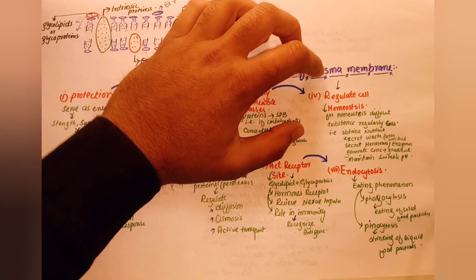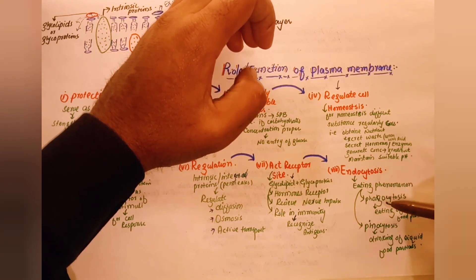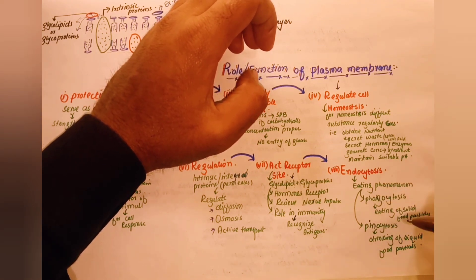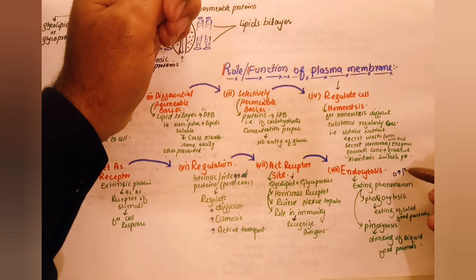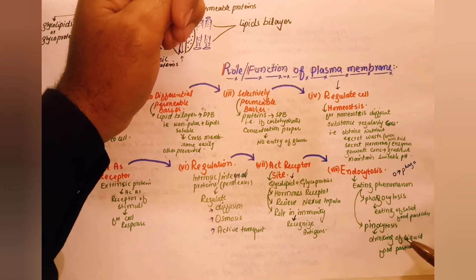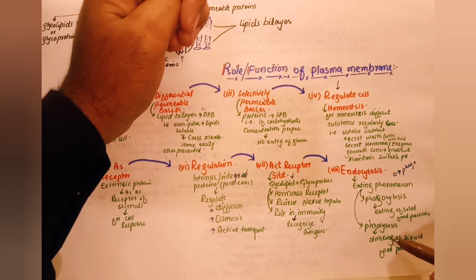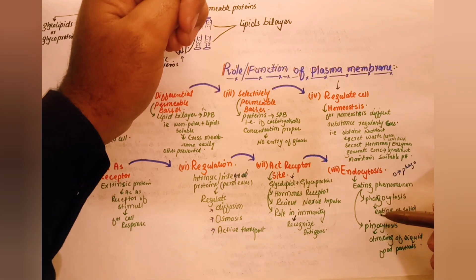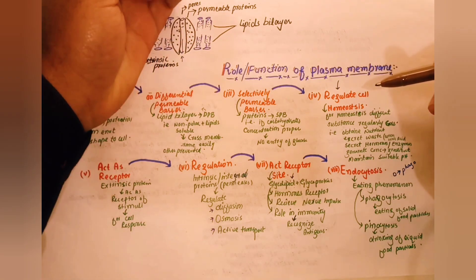Endocytosis is the eating phenomenon of the plasma membrane. It includes phagocytosis, which is the eating of solid food particles, and pinocytosis, which involves the uptake of liquids or fats. These are types of endocytosis involving the plasma membrane.